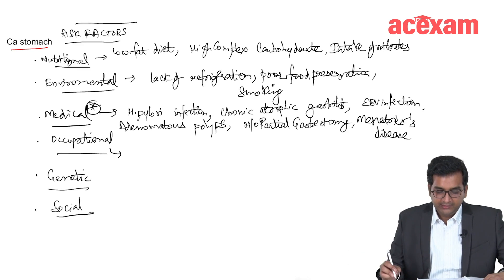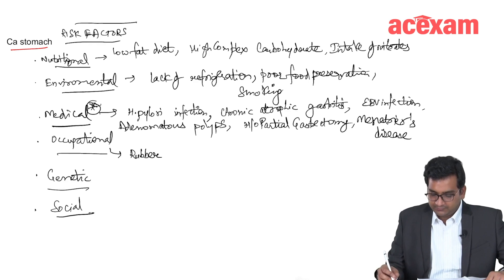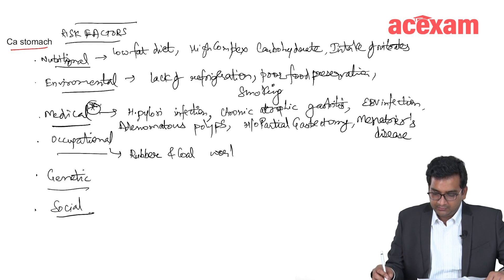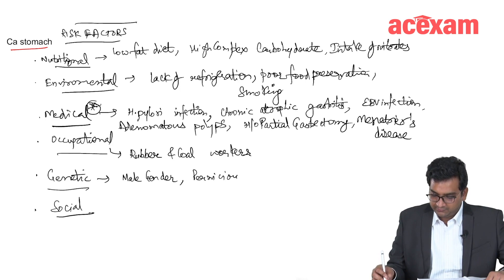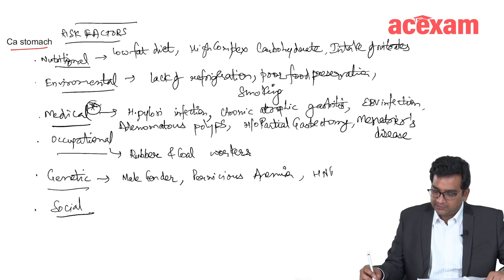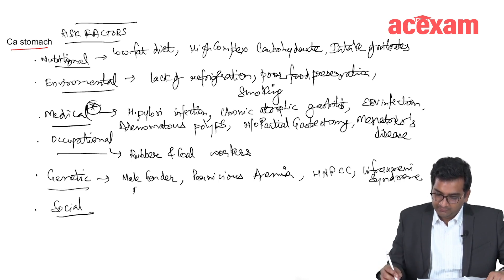Occupational risk factors include rubber and coal workers — those working in the rubber industry and coal industry. Genetic factors include male gender, pernicious anemia, HNPCC, Lynch syndrome, and blood group A.